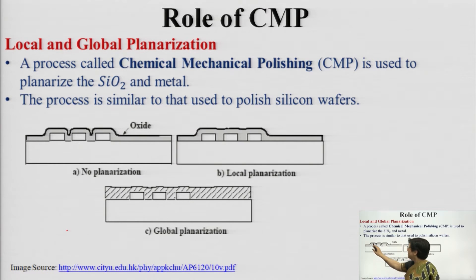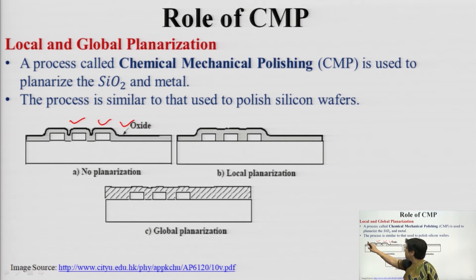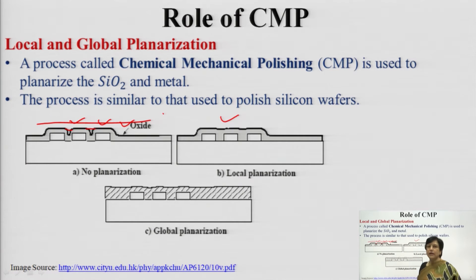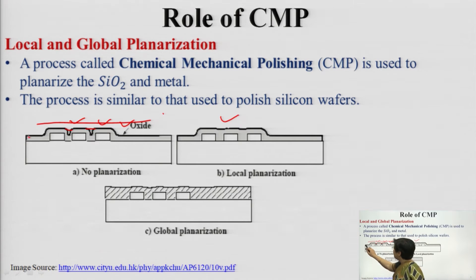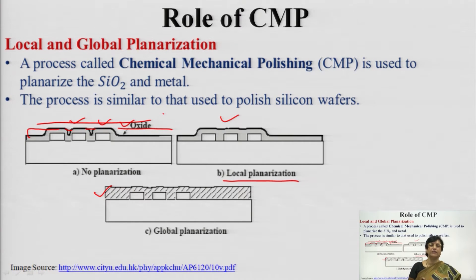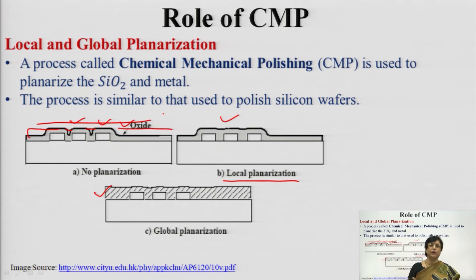When you are depositing the oxide, unevenness is observed. This unevenness is not recommended in the end product. Therefore, we need local planarization, which is just filling up local gaps, whereas global planarization involves filling these gaps with an oxide layer through and through. Local planarization addresses only local unevenness between different areas.